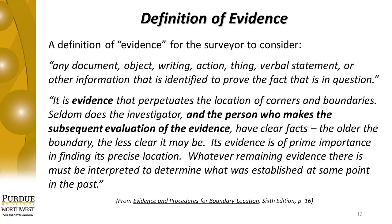It is evidence that perpetuates the location of corners and boundaries. Seldom does the investigator and the person who makes the subsequent evaluation of the evidence have clear facts. The older the boundary, the less clear it may be — its evidence is of prime importance in finding its precise location. Whatever remaining evidence there is must be interpreted to determine what was established at some point in the past.